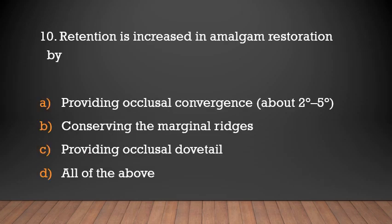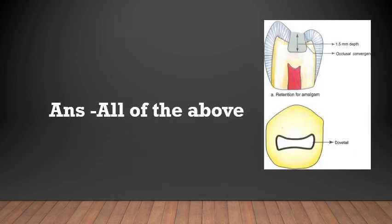Retention is increased in amalgam restoration by: providing occlusal convergence of about 2 to 5 degrees, conserving the marginal ridges, providing occlusal dovetail, or all of the above? The answer is all of the above. Retention is increased by providing occlusal convergence of 2 to 5 degrees, providing the occlusal dovetail, and conserving the marginal ridges.